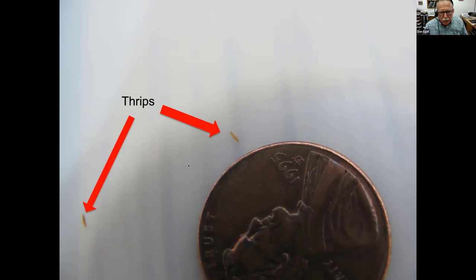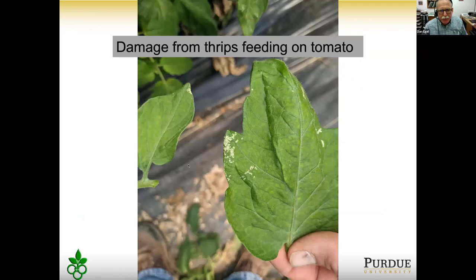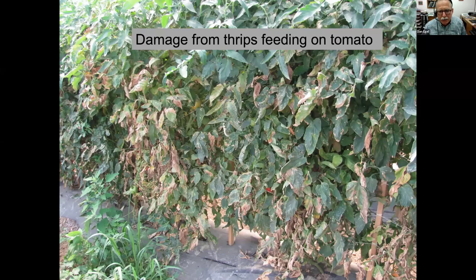This photo shows how small thrips are compared to a penny. Adults are very small, slender, and yellow-brown. The nymphs look like wingless adults and cause rasping injury to the leaf surface, creating discolored patches. Even without the virus, thrips cause visible feeding damage — you can see feeding on the edge of the leaf. As a non-entomologist, it's often easier to find the telltale feeding damage than the thrips themselves.